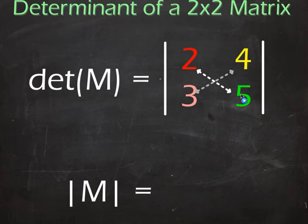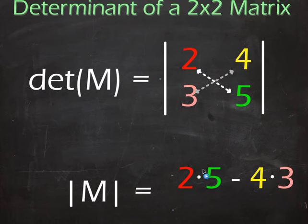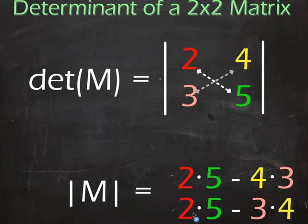We've got 2 times 5 and we will take away 3 times 4. So that's like element a times d take away c times b or b times c. So that's two lots of 5 take away three lots of 4, which is of course the same as two 5s take away four 3s. As long as you're doing the right diagonals and taking the second one away from the first, you'll be fine.